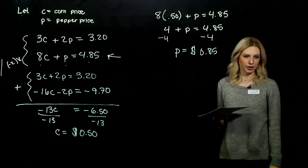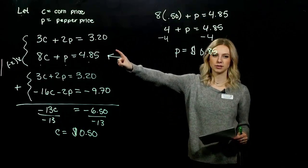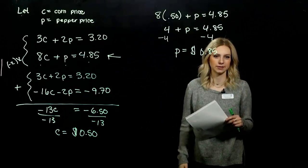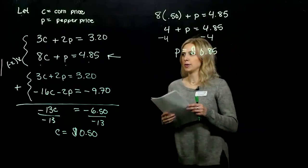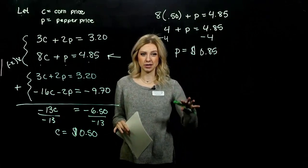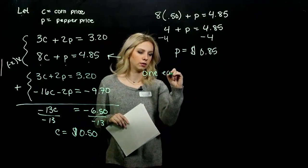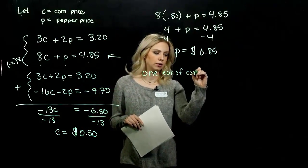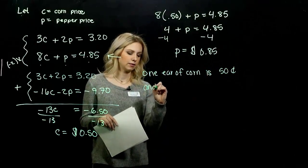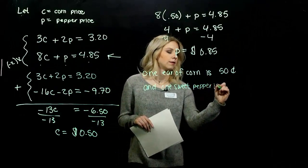And if we weren't sure if those values were actually true, if you think you made a mistake somewhere, plug it back into the original system. Make sure that it satisfies both of them. Did they really pay $4.85 based on these prices and what they bought? And as always with application problems, we kind of want to sum it up. So one ear of corn is 50 cents, and one sweet pepper is 85 cents.